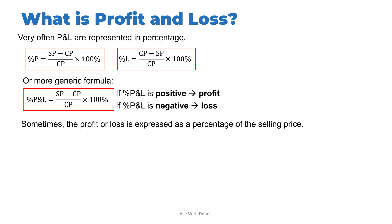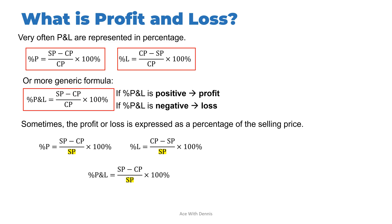Sometimes profit or loss is expressed as a percentage of the selling price. The percentage profit formula becomes: (selling price − cost price) / selling price × 100%. The percentage loss formula is: (cost price − selling price) / selling price × 100%. Most of the time the question will ask you to express as a percentage of the cost price, but sometimes it will ask for a percentage of the selling price — so read the question carefully.